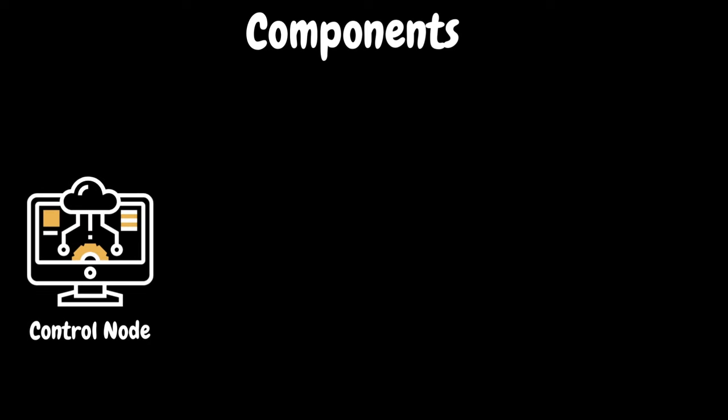Before we dive into the steps for doing this distributed testing, it is a good idea to understand the terminology used. First one is control node. In the past, this was referred to as a master system. In other performance testing tools like LoadRunner, it is called a controller. This is the system running JMeter GUI or non-GUI which controls and coordinates the overall testing process. It is responsible for managing and distributing the load across multiple servers and collecting and aggregating the results.